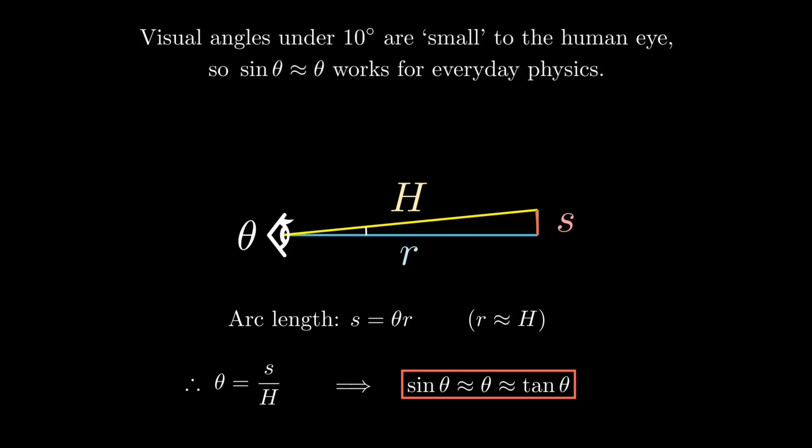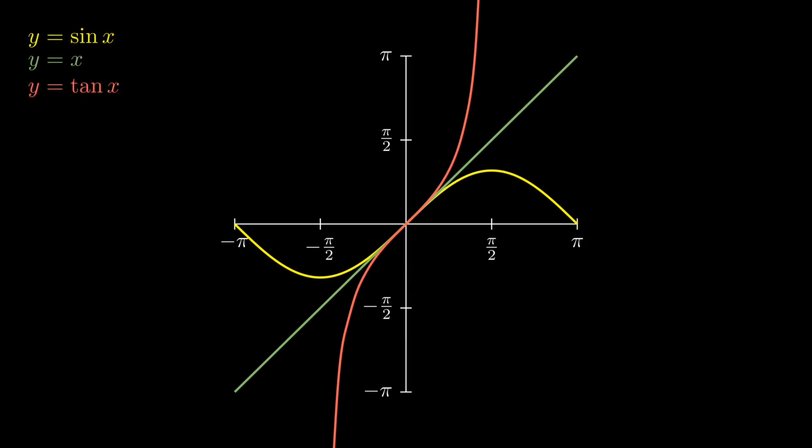This approximation holds extremely well for angles typically smaller than about 10 degrees, making it an incredibly useful simplification in many areas of physics and engineering. We can visually verify this. Consider this simple graph. So we have three functions. So y equals sine x plotted in yellow, tan x in red, and the straight line y equals x in green.